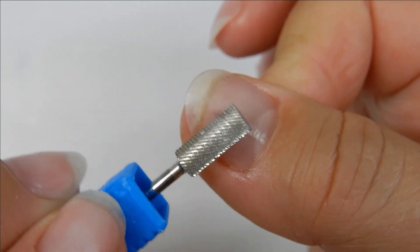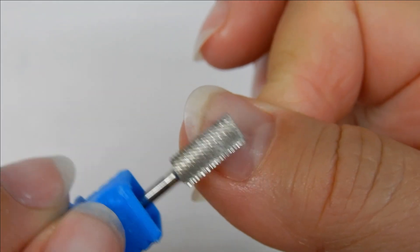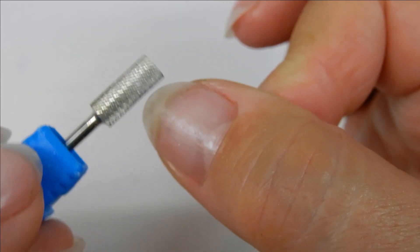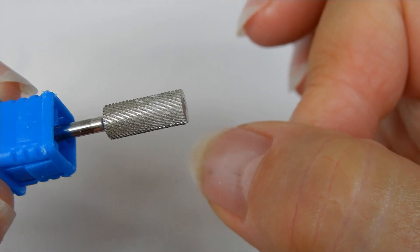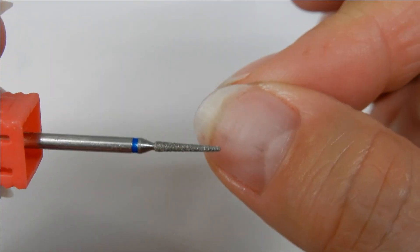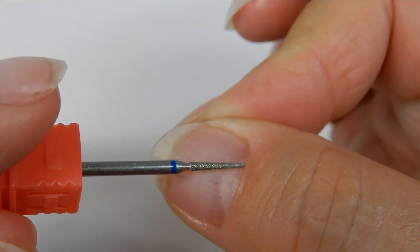Just very little pressure on the nail, just to remove what is left. Light movements, you know, no pressure at all. You should remove the rest of the product with this extra fine.